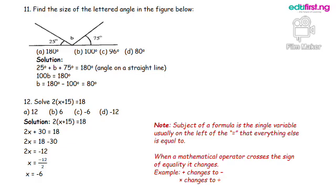Making 2X the subject, we have 2X equals 18 minus 30, which gives us minus 12. So making X now the subject, we have minus 12 all over 2, and that will give us minus 6.